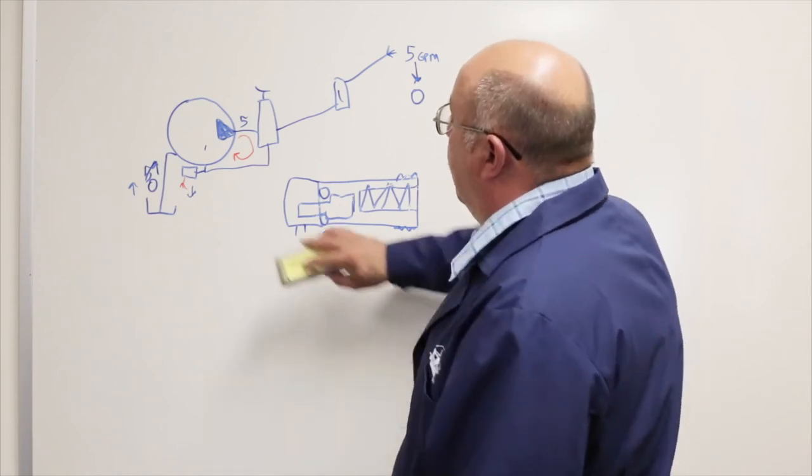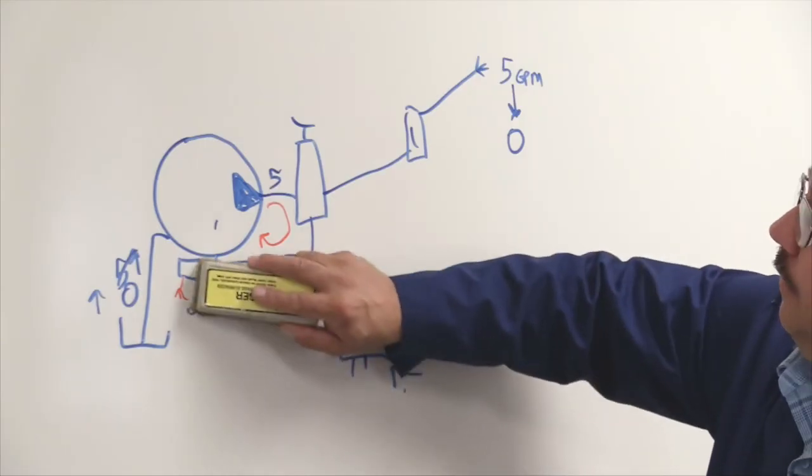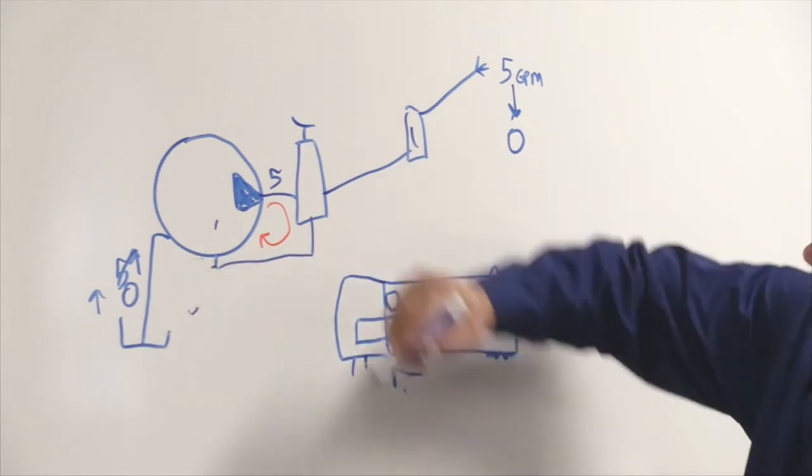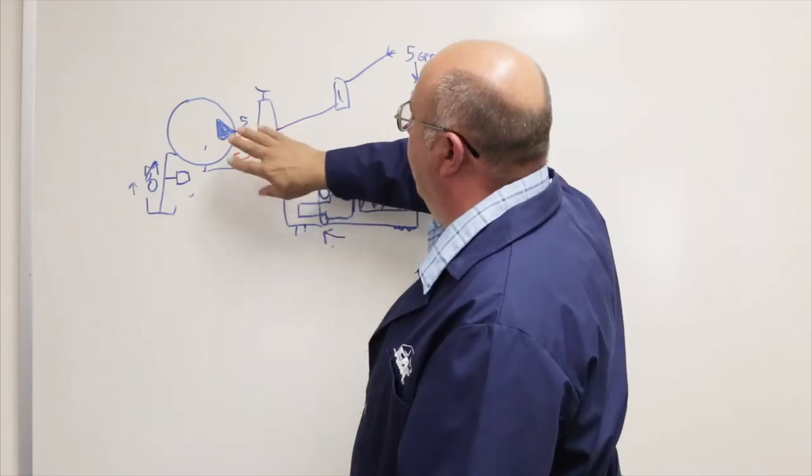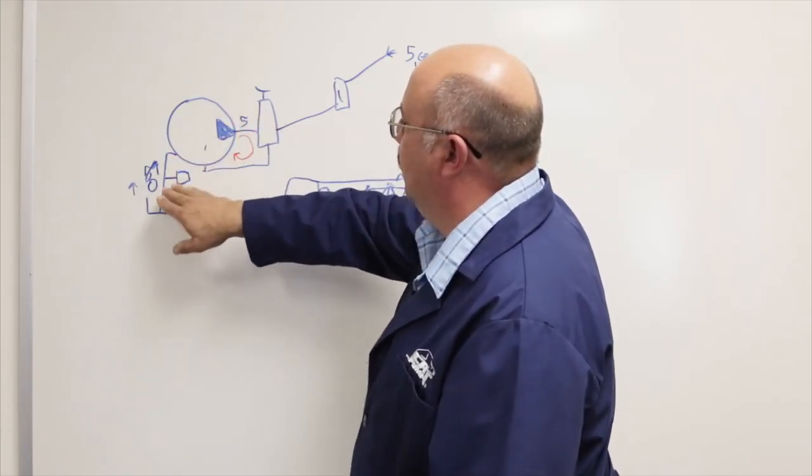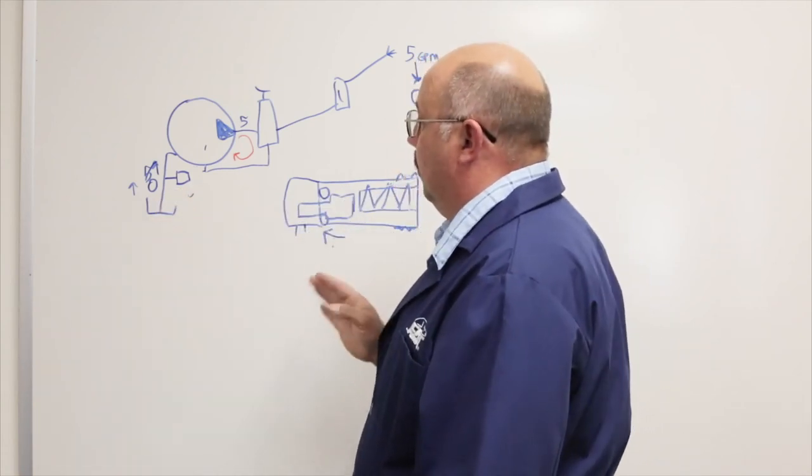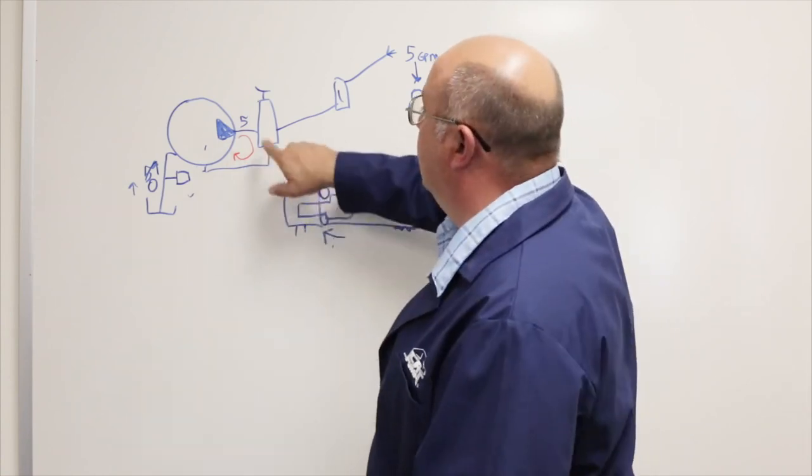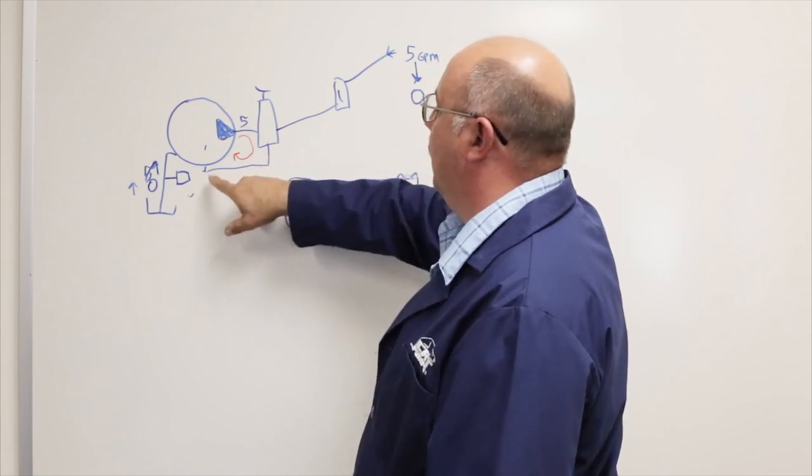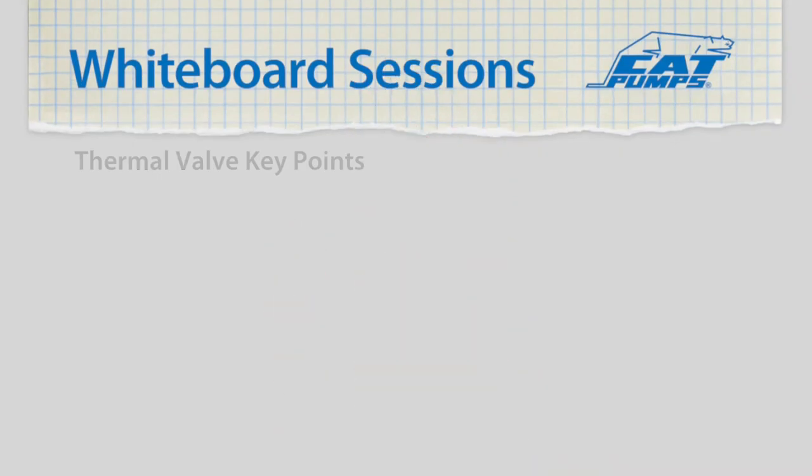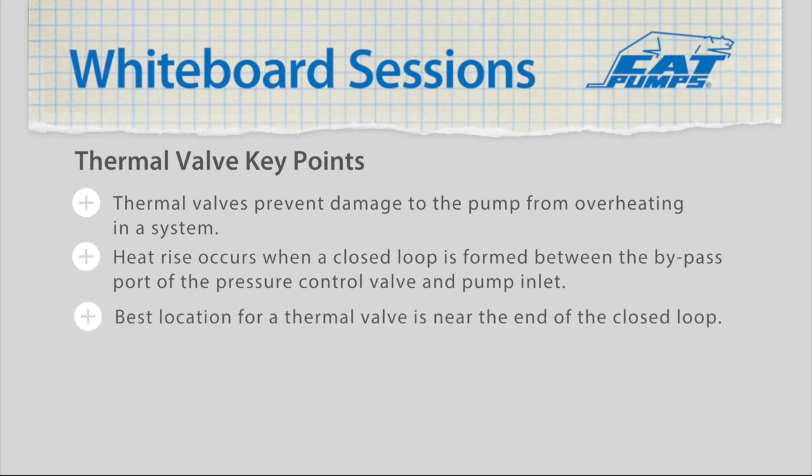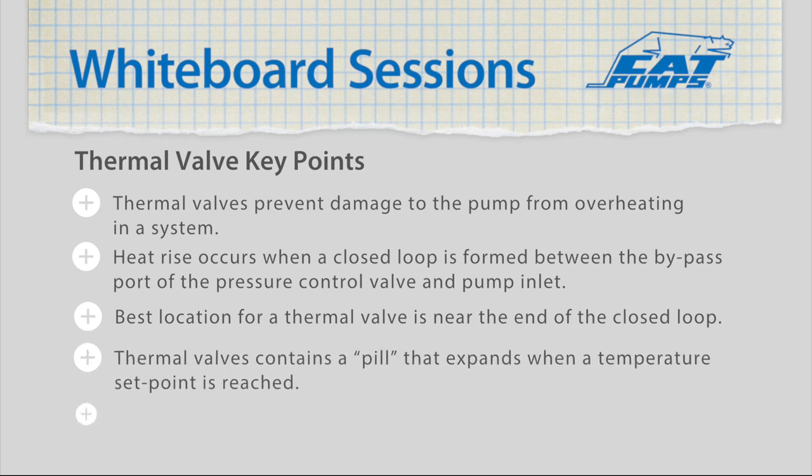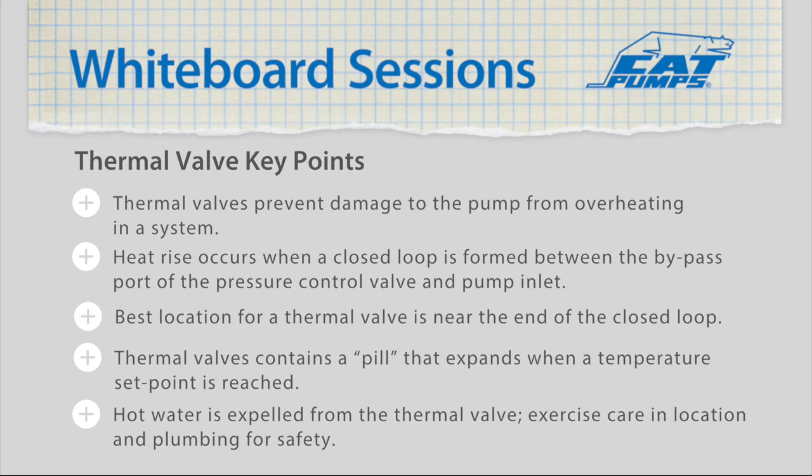Now, what we're also going to cover is where to mount this thermal valve. If I were to take it off of here, perhaps, and maybe mount it into my inlet line here, now when this water's in a loop, the temperature rise is still happening, but it's not getting to where the thermal valve is located. So we have to be very careful to mount the thermal valve in a position so it's going to see the temperature rise. Get it in this loop. Preferably as far at the end of the bypass loop as possible just before re-entering the pump.